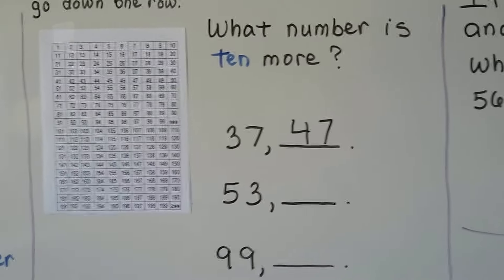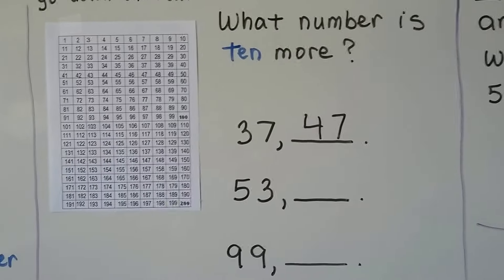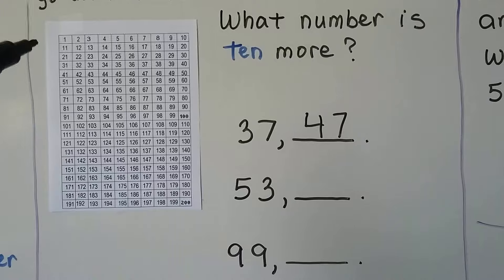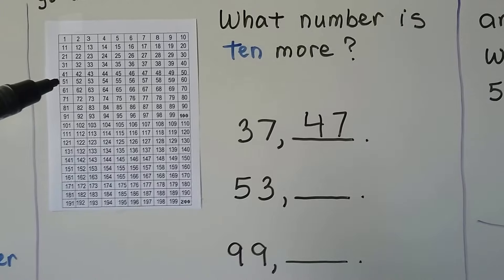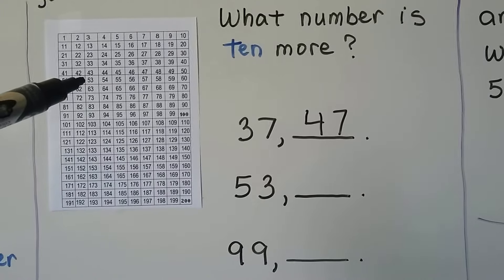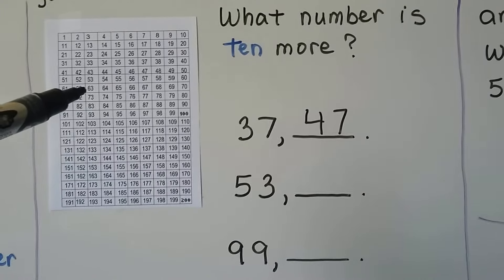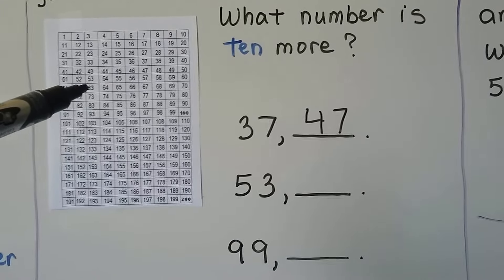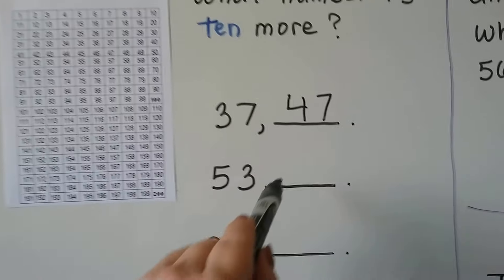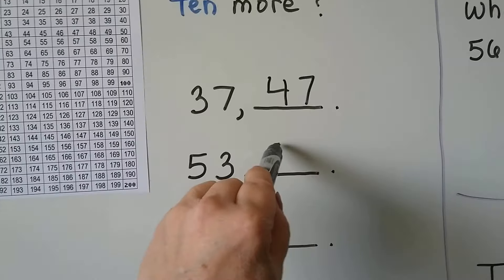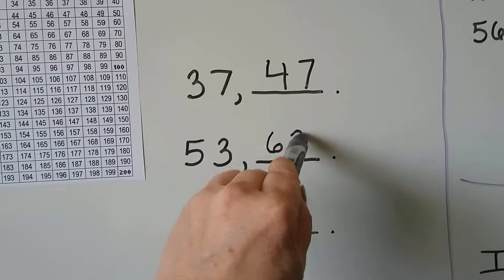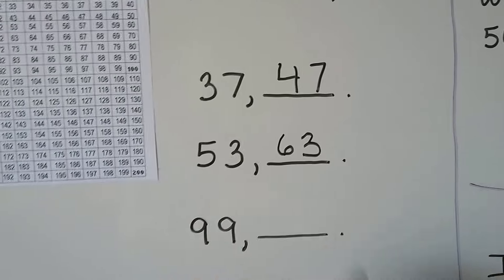What's 10 more than 53? We find 53 on the chart — here's the 50s. There's 53; we go down one row, and it's 63. The tens place went up to a six, and the ones place stayed the same.